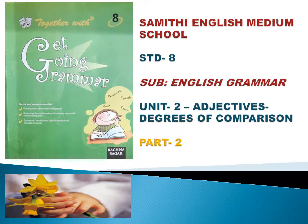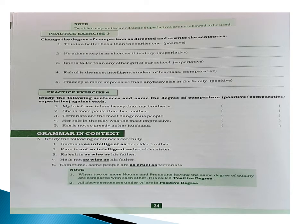See this practice exercise number three: change the degree of comparison as directed and rewrite the sentence. Let us do the first one: 'This is a better book than the earlier one.' Now this sentence we have to change into positive degree. It is given in the comparative degree — 'better than' — so it is a comparative sentence. I will change it into positive.